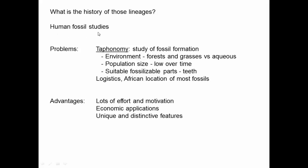So that's how we're related — but what is the actual history of these lineages, particularly the human lineage? When we think about doing human fossil studies, there are some significant problems, best understood through a field called taphonomy. Taphonomy is the study of fossil formation, and when applied to humans, we realize that humans are actually a terrible species to do fossil studies with.